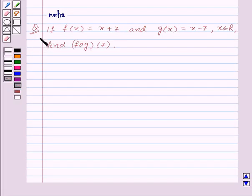Hi and welcome to the session. Let us discuss the following question which says if f(x) is equal to x plus 7 and g(x) is equal to x minus 7, where x belongs to R (the set of real numbers), find f of g of 7.